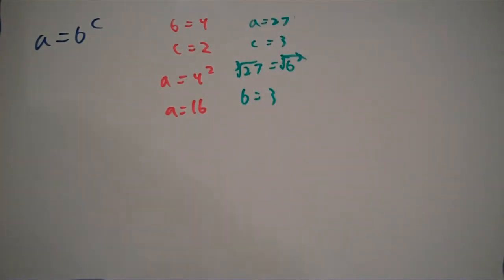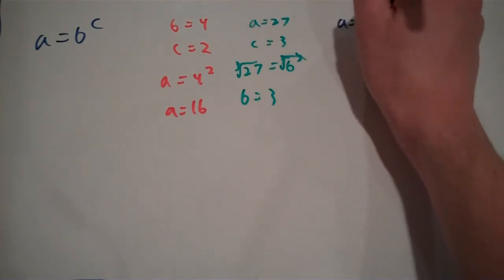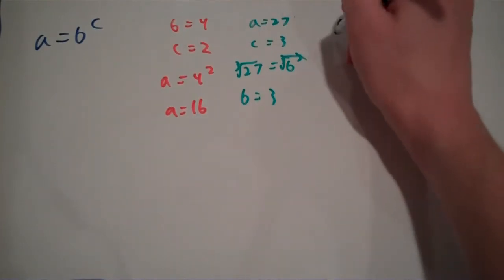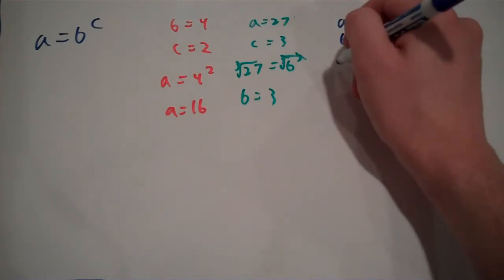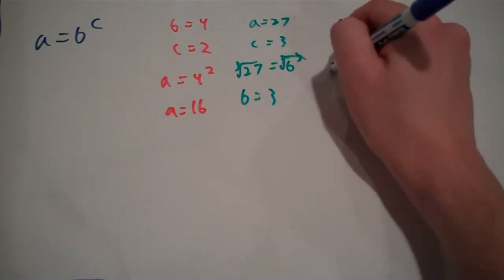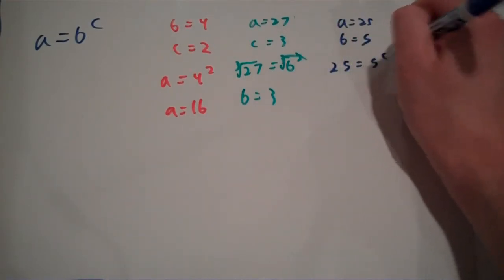I've previously done a video on both of these concepts. However, let's say that we have a equals 25 and b equals 5. That gives us 25 equals 5 to the c. To figure this out, we need to use logarithms.